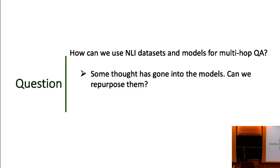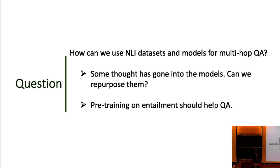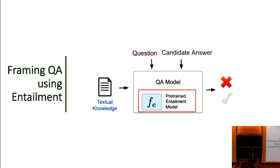Can we repurpose them? In particular, if you have pre-trained models that work well on entailment, can we take them and use them for this QA task, since these tasks are related? The basic idea: we're going to look at questions with candidate answer choices. Given a question and a candidate answer, we want our multi-hop QA model to give a score — the likelihood of this answer given some textual knowledge as input. So we want to use a pre-trained entailment model to build this multi-hop QA model.